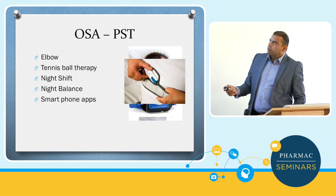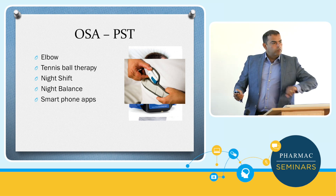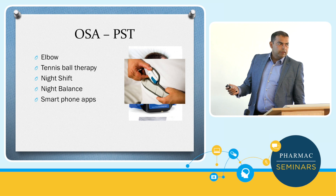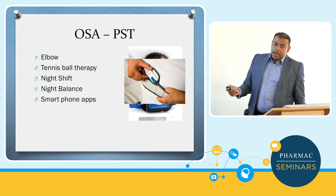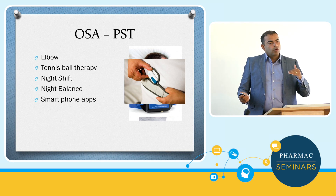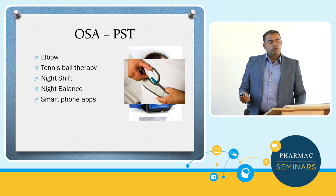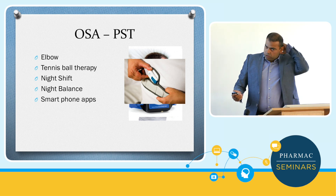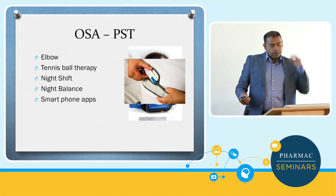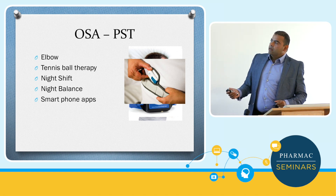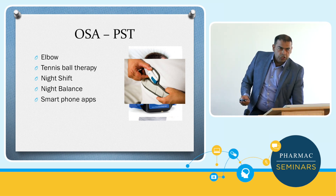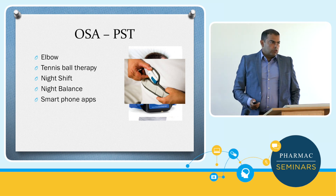Another simple treatment modality: elbow in the ribs — positional sleep training. Tennis ball in the waistband. There are also apps which gently vibrate without waking you up, to motivate the patient to turn over. Night Shift or Night Balance goes around the waistband. Some people find that claustrophobic compared to Night Shift sitting around their neck. There are also smartphone apps that vibrate based on your body position, strapped onto your shin — it vibrates against the bone without waking you up.